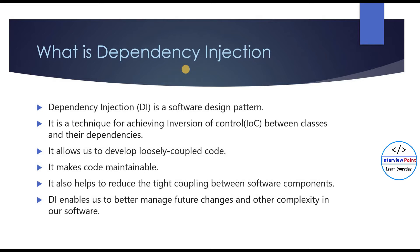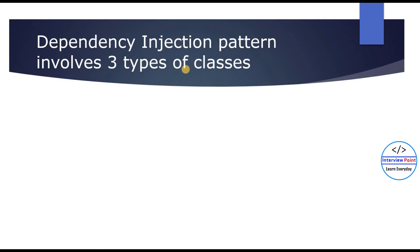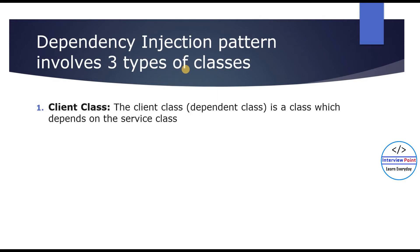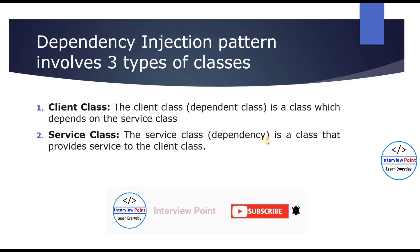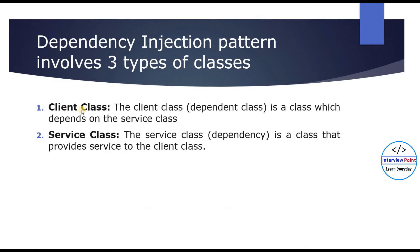There are three types of classes involved in the dependency injection pattern. The first is the client class — the client class is the dependent class, which depends on the service class. The second is the service class — the service class is a class that provides service to the client class. The third is the injector class — the injector class injects the service class object into the client class.